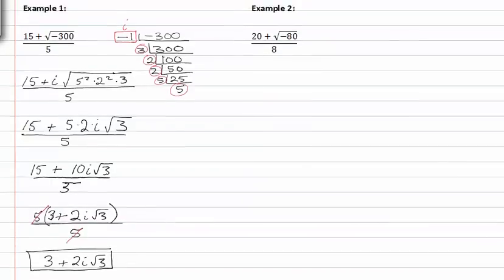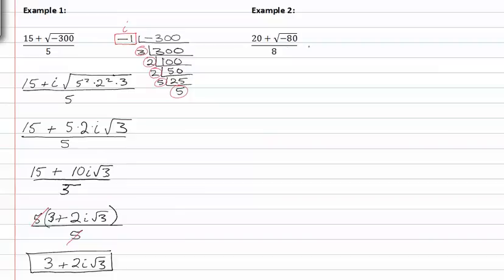Let's go ahead and move on to example two. We're going to remember to prime factor negative eighty. We know that negative eighty could be factored and we could pull out a negative one. This would leave us eighty. Remember the negative one is i when we pull it out of the radical sign.